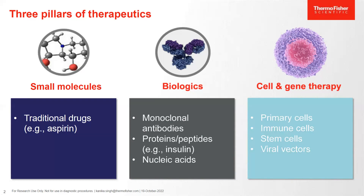There are three pillars of therapeutics. The first one consists of small molecules. Small molecules are extracted or synthesized chemical compounds which are used in traditional drugs, and examples are aspirin, penicillin, etc.